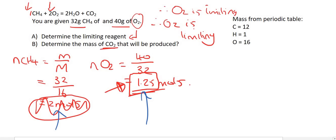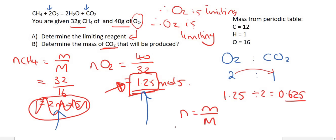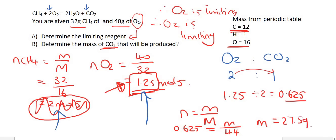The question says: determine the mass of CO₂ that will be produced. From the balanced equation, the ratio of O₂ to CO₂ is 2 to 1. We have 1.25 moles of oxygen, so we divide by 2 to get 0.625 moles of CO₂. Using n = m over M with molar mass of CO₂ equal to 44 (one carbon plus two oxygens), the mass works out to 27.5 grams of CO₂.